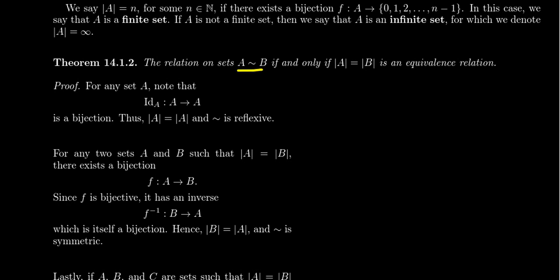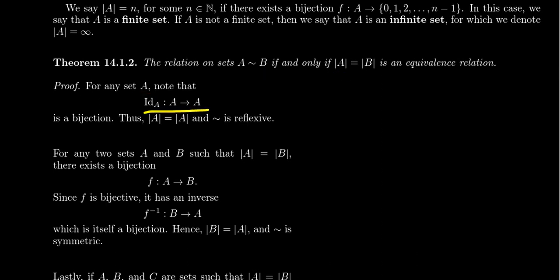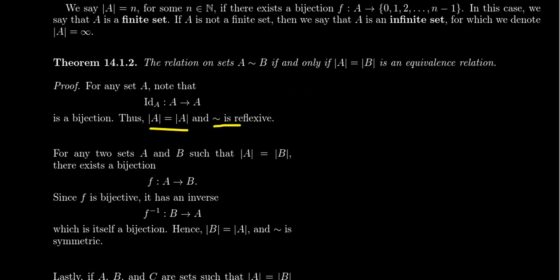Consider the relation: A is related to B if and only if they have the same cardinality. This is an equivalence relation — there are three things we need to show: reflexivity, symmetry, and transitivity. For reflexivity, given a set A, we want to show A has the same cardinality as A. The identity function, which takes every element of A and maps it back to itself, is a bijection from A to A. Therefore A has the same cardinality as A, showing the relation is reflexive.